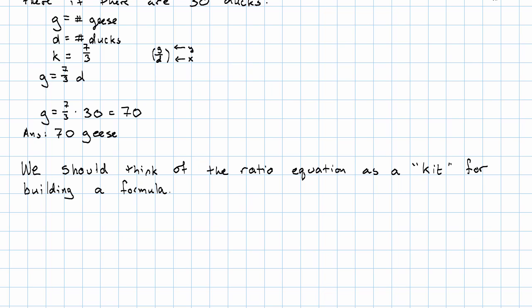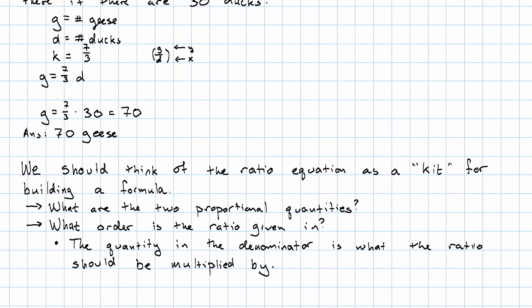What do we really do? We say, well, what are our two proportional quantities? And if the ratio is given, what order is the ratio given in? Then the quantity in the denominator, that is on the bottom, is what the ratio should be multiplied by. The ratio equation expresses that in terms of variables, but we should keep in mind what we're doing as we set this up.